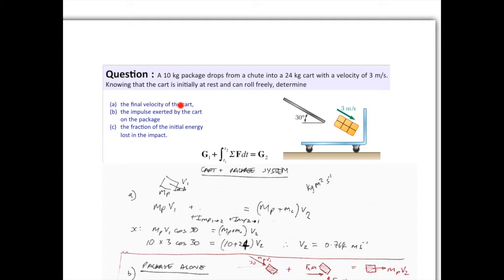You're asked to find out initially what is the final velocity of the cart, and this just becomes a simple momentum analysis because the net impulse is going to be zero. So to begin with, the linear momentum in the system is conserved, so g1 is equal to g2.